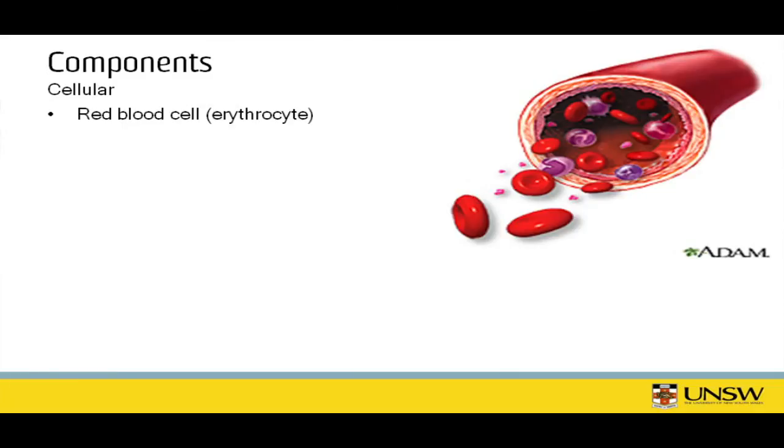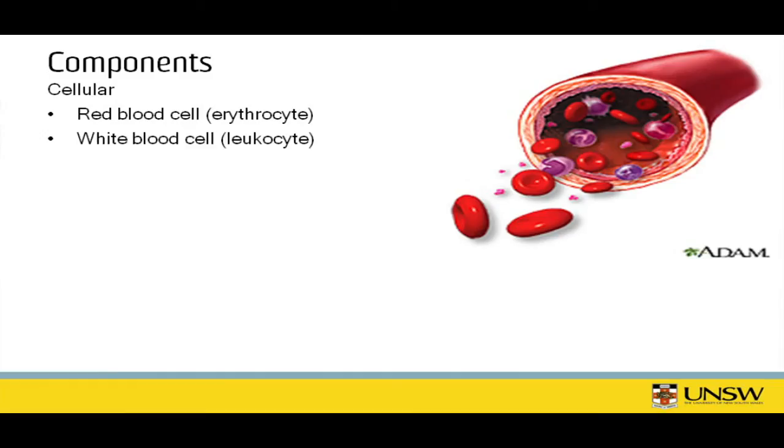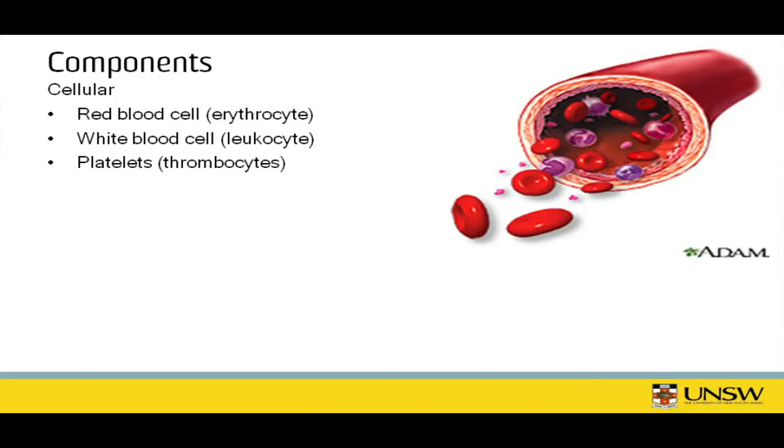When we talk about blood, we have to ask ourselves what forms blood, and we can separate these into cellular and non-cellular components. Within the cellular components, we have the red blood cell, or erythrocyte, which carries carbon dioxide and oxygen around the body — removing carbon dioxide at the lung and facilitating oxygen uptake in the tissues. The white blood cell, or leukocyte, fends off bacterial, viral, and parasitic infections. Lastly, platelets — called thrombocytes — are cellular fragments without a nucleus that are able to form a clot.